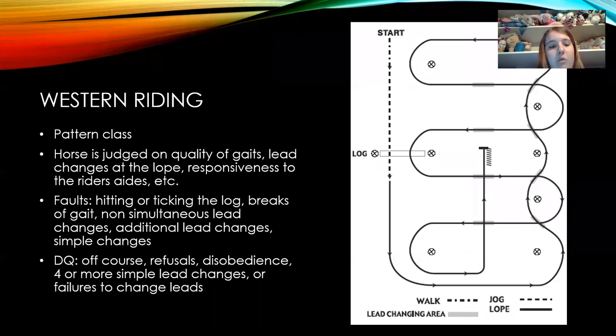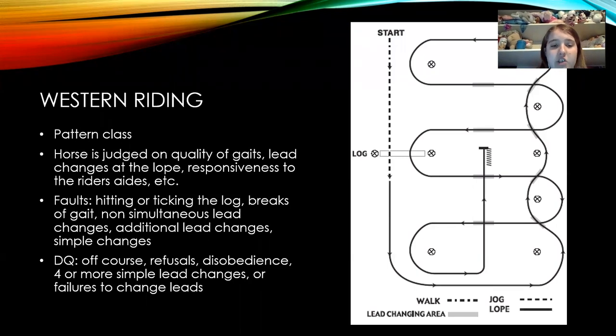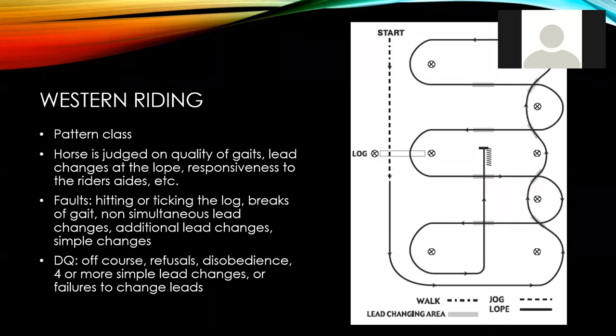Different faults in Western riding include hitting or ticking the log, breaking gait, lead changes that aren't simultaneous — meaning the horse doesn't immediately switch leads in both the front and hind legs — and having too many lead changes or doing simple changes where you allow the horse to go down to a trot to change lead. However, if the horse goes down to a trot to do a simple lead change more than four times, that's considered a disqualification, along with being off course, refusing to do part of the pattern, going off pattern, being disobedient, or failing to change leads.